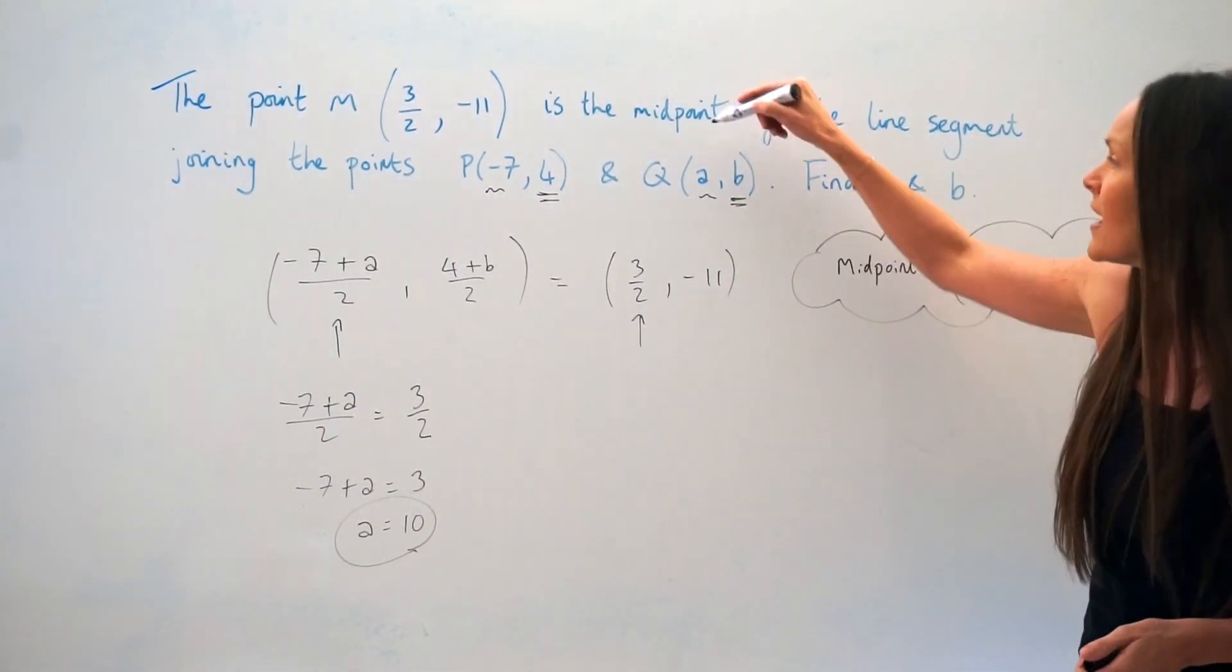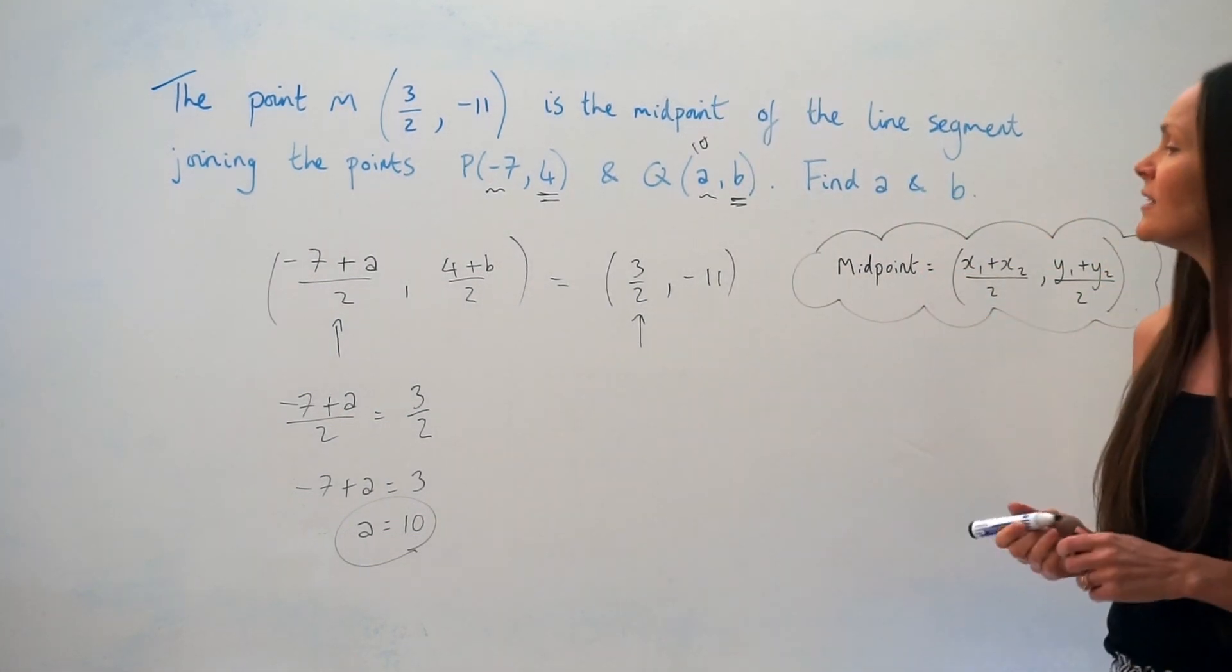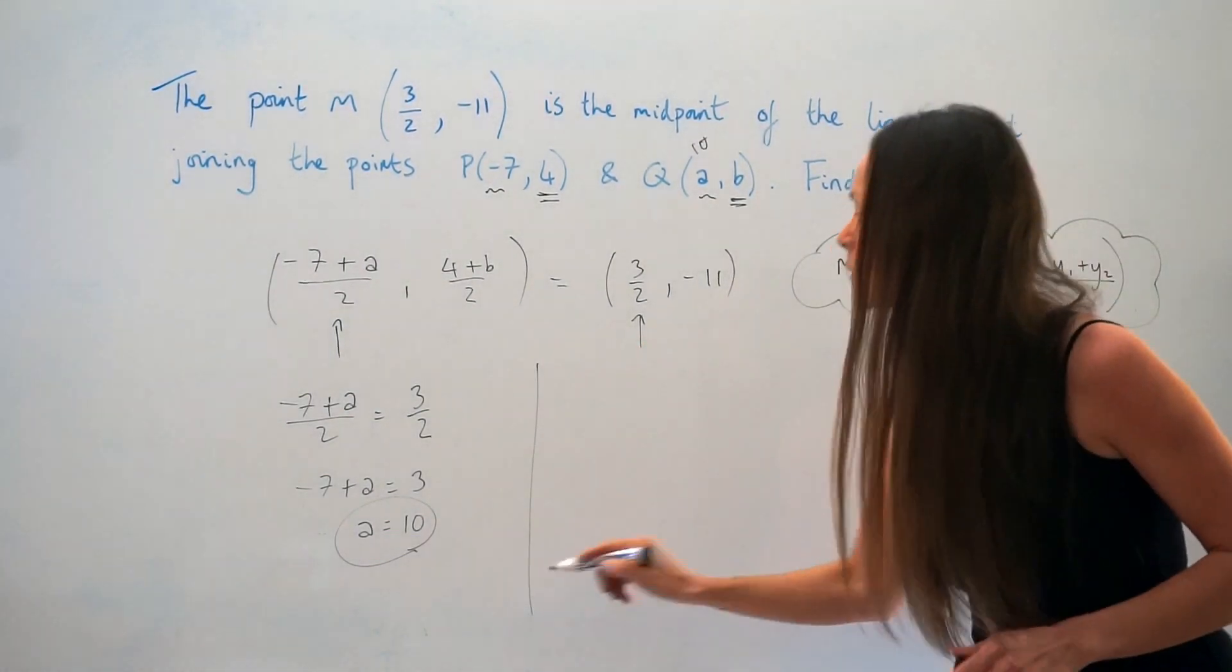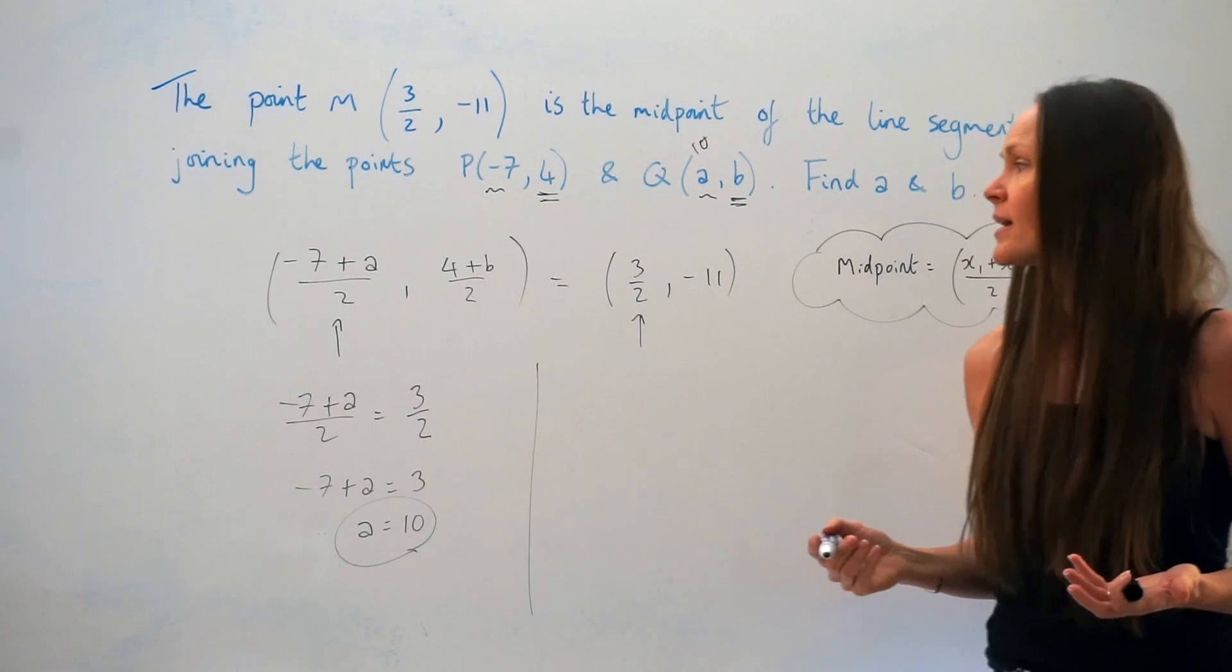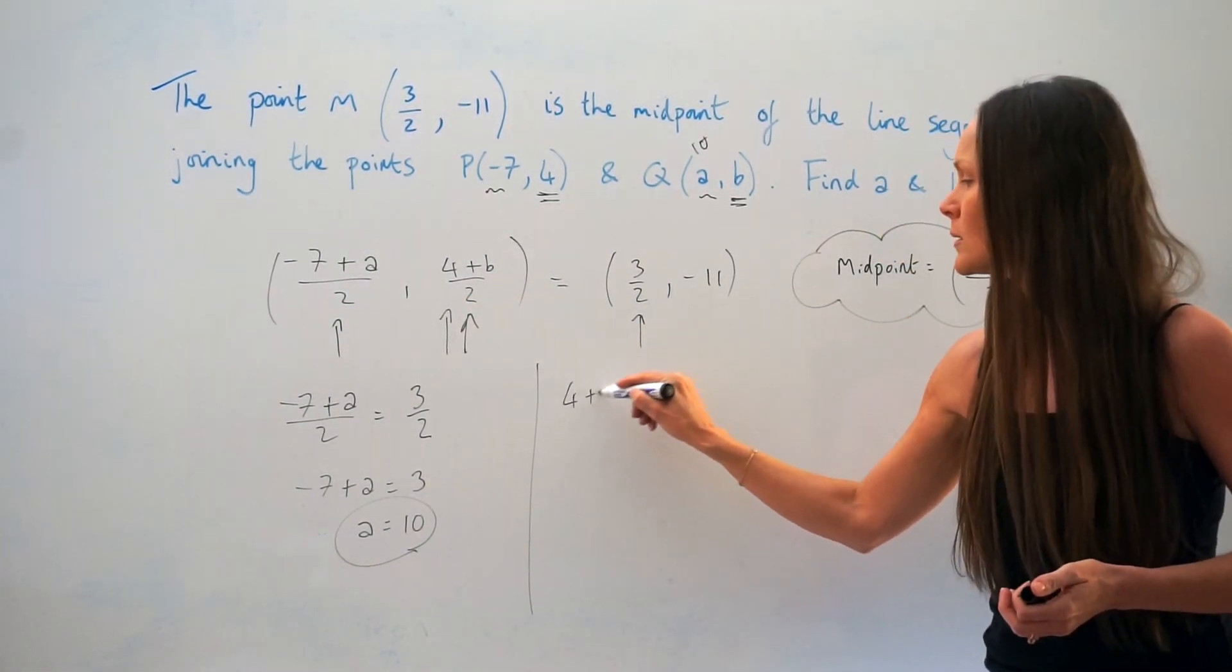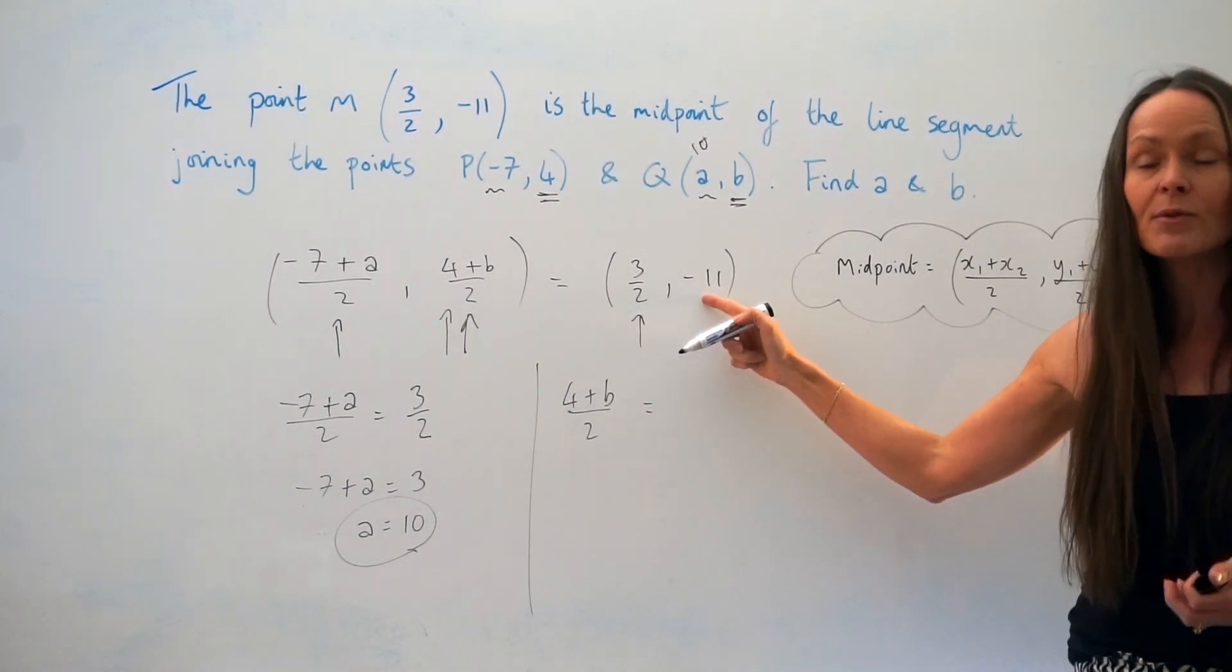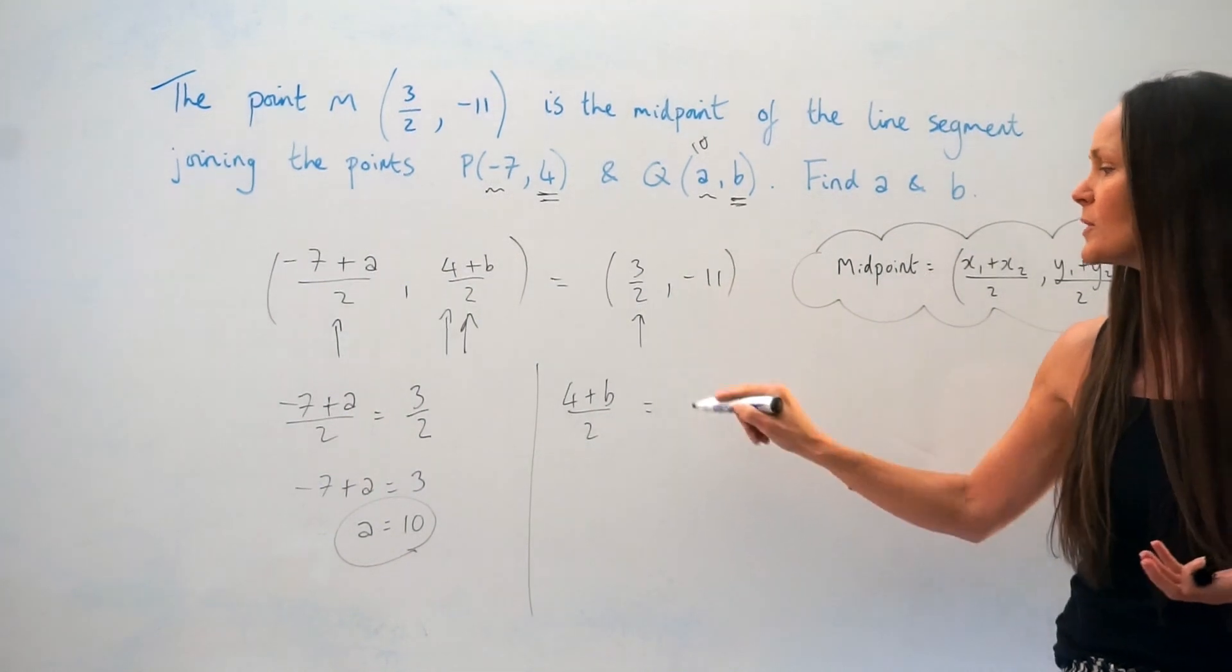So that's the x coordinate of point Q, 10. Now, for the y coordinate, we're going to do exactly the same thing. We're going to look at the y calculation, so 4 plus B over 2. And this time, it has to equal negative 11 because that's the y coordinate of the midpoint.